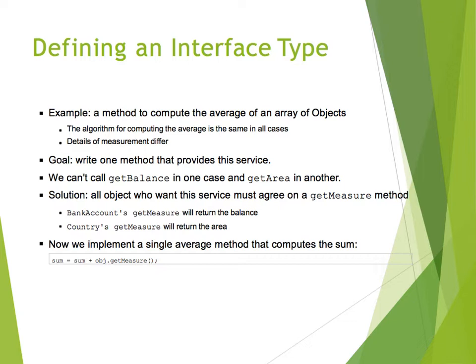Let's assume that we want to write a method to compute the average of an array of objects, where each object may be an instance of a different class. All objects are instances of the Object class because Object is the superclass of all classes. When calculating the average, the algorithm is the same: measure each object, add all the measurements together, and divide by the number of objects.